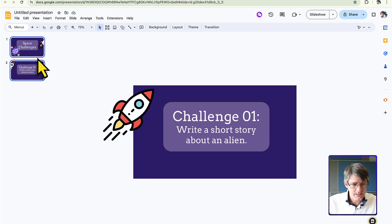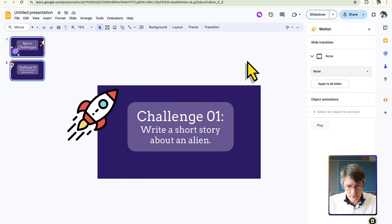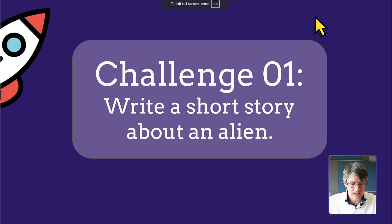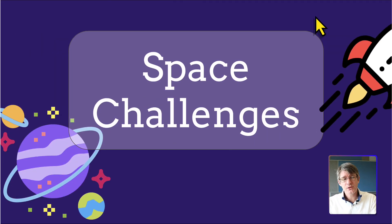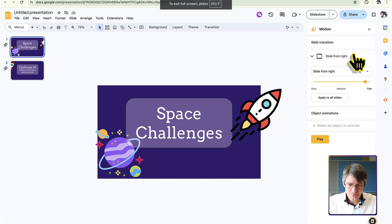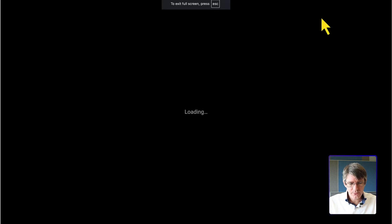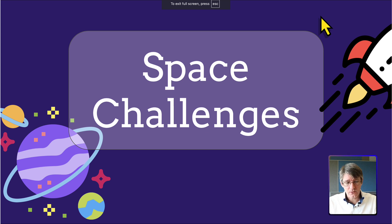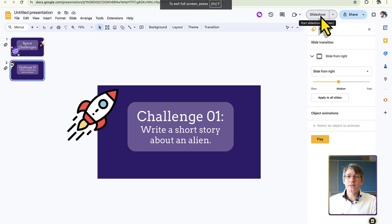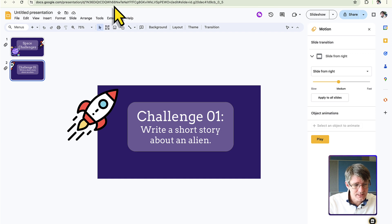Select both slides and go to Transition. Choose the 'Slide' transition and set it to slide from right to left. Apply to all slides, then press slideshow. It already gives a continuous animation effect, but it's very fast. Change the speed to medium, apply to all slides, and now when you press slideshow and advance, it slowly and smoothly slides to the next slide.